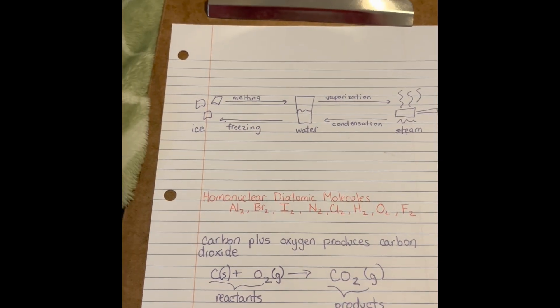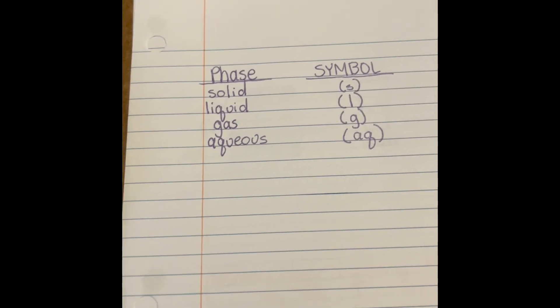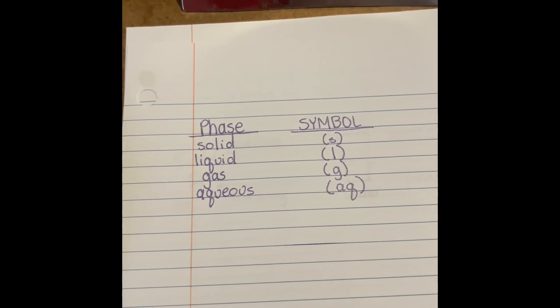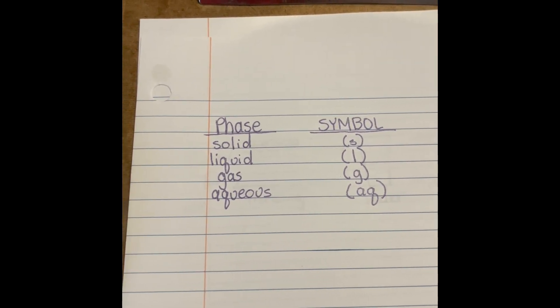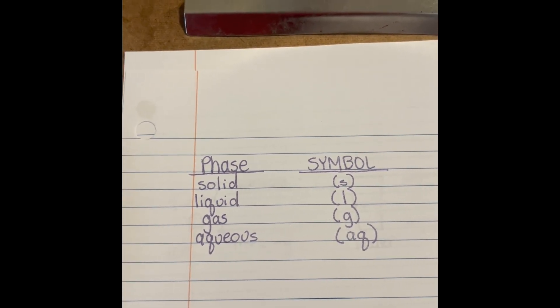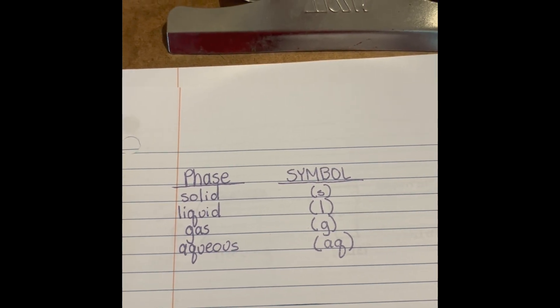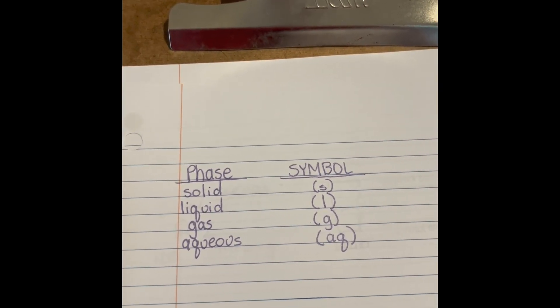Here is your handy-dandy chart — it's on page 223. These are the abbreviations for the phases. When it's a solid, you put an S in parentheses. When it's a liquid, you put an L in parentheses. When it's a gas, you put a G in parentheses. And when it's aqueous — meaning dissolved in water — you put AQ in parentheses. Sometimes chemists don't use phase symbols, but it's good to use them when you can because they add important information.